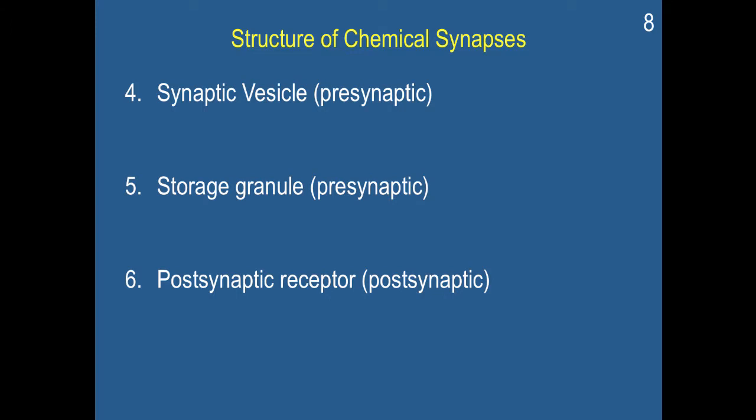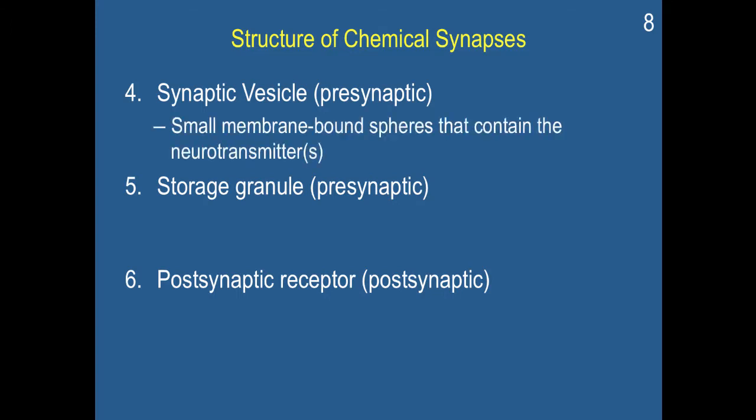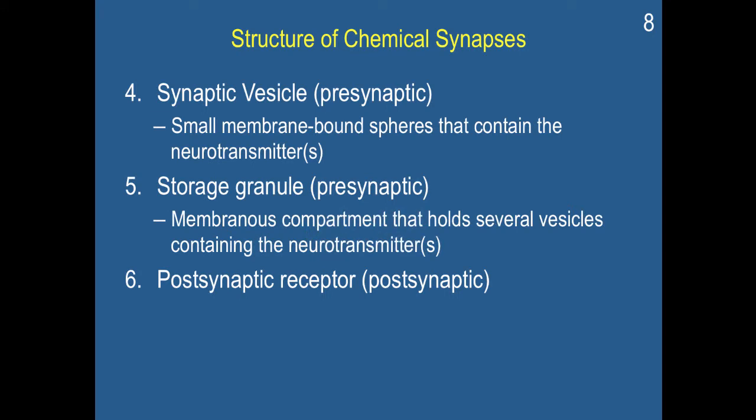There are a couple of other important elements in the structure of chemical synapses. Number four is the synaptic vesicle — small membrane-bound spheres on the presynaptic side that carry the neurotransmitters. You also have storage granules, also at the presynaptic side — membrane compartments that hold several vesicles containing neurotransmitters. And then you have the postsynaptic receptor: the site to which a neurotransmitter molecule binds.